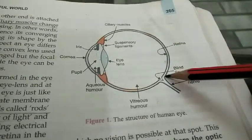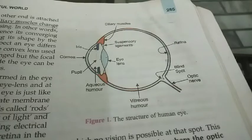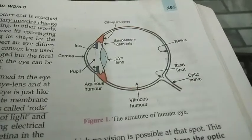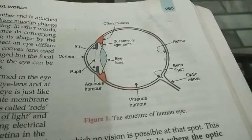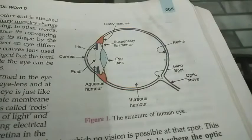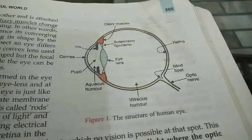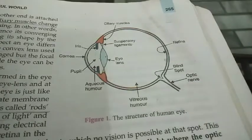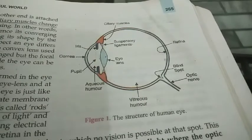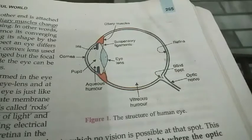Next we have the Retina. The retina acts as a light-sensitive screen where the image of the object is formed. It contains a number of cells in the form of rods and cones which are very sensitive to light, and these cells convert light energy into electrical signals. Next we have the Optic Nerve. The optic nerve is formed by the nerve fibers coming from the retina. It carries electrical signals to the brain, and the brain finally interprets the signal.